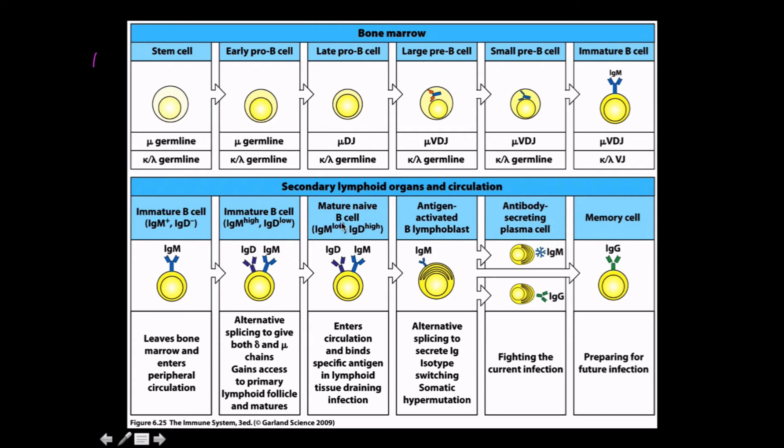Mature naive B-cells - cells that have developed further but haven't presented themselves to antigens - enter circulation and bind to specific antigen in lymphoid tissue draining infection areas. The activated B lymphoblast becomes a plasma cell and then a memory cell. That's the processes of everything we just talked about, summed up in one nice picture.